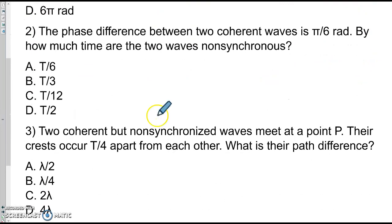Number 2. The phase difference between coherent waves is pi over 6. By how much time are the two waves non-synchronous? So we're going from phase difference into the time difference.